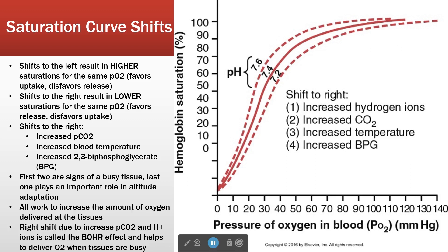So if you have increased CO2, increased temperature, and increased hydrogen ions — is that a busy or not busy tissue? That is a busy tissue. Do we want more oxygen delivery or less in a busy tissue? More. So it makes sense that these things shift to the right, because we get a lower saturation for the same PO2 — in other words, we increase dumping. A shift to the right increases oxygen offload. These are all components of autoregulation too, so they're also going to increase blood flow. But in addition to that, those characteristics are also going to encourage hemoglobin to dump more oxygen in that area. You see why I like hemoglobin? It does a lot of smart things for just being a dumb protein.